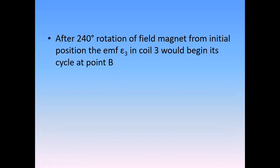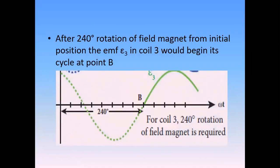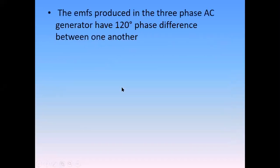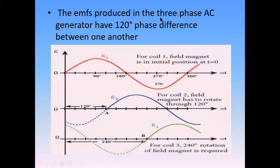Now for the third coil: the third coil will start from 240 degrees, so the angle between the first and the third coil is 240 degrees. It will start from point B, and the dotted line shows the previous cycle. Between the first and the second it is 120 degrees; between the second and the third it is 120 degrees; and between the first and the third it is 240 degrees.